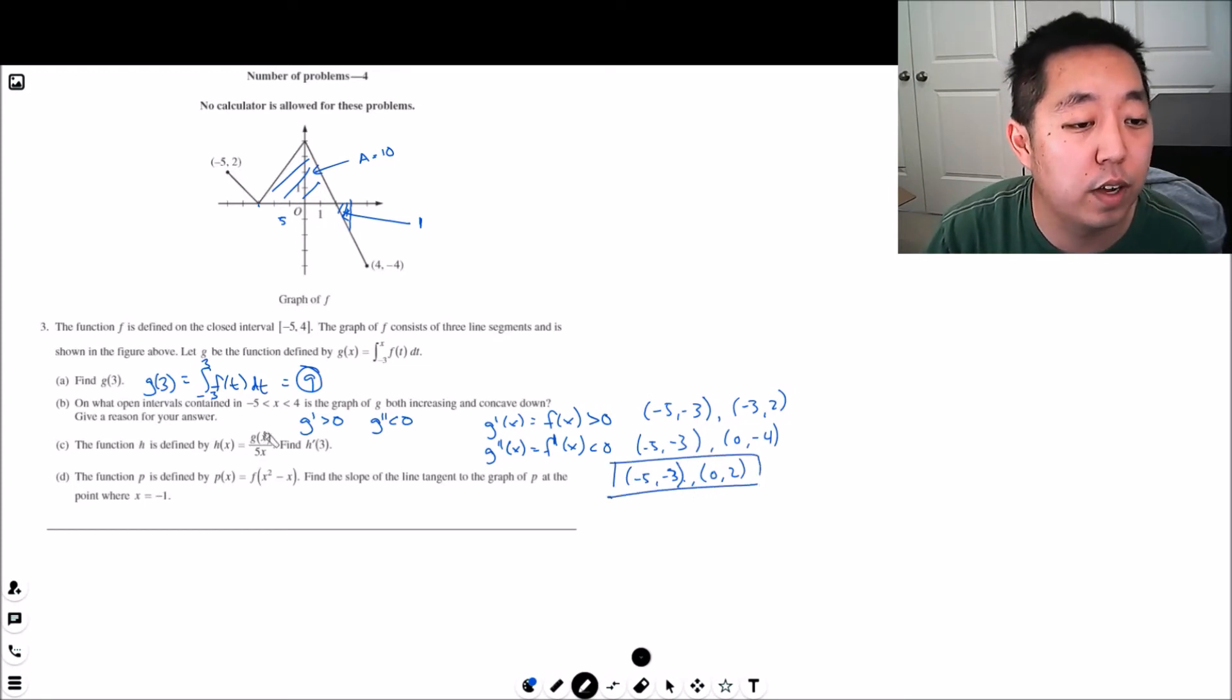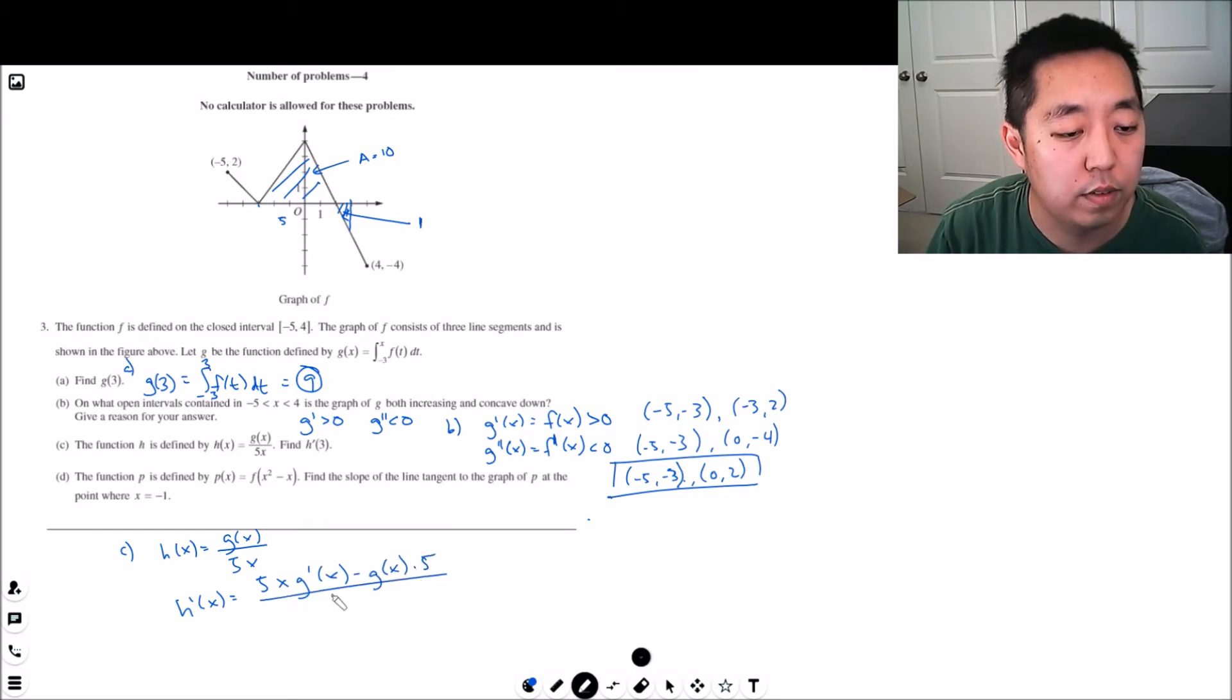The function h is defined by h of x equals g of x over five x. Find h prime of three. h prime of x is equal to by quotient rule, bottom times the derivative of the top minus top times the derivative of the bottom which is five, over the bottom squared. This is five x times g prime which is f of x, minus g of x times five, divided by five x squared.